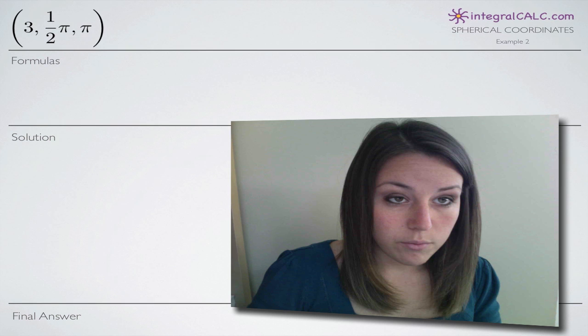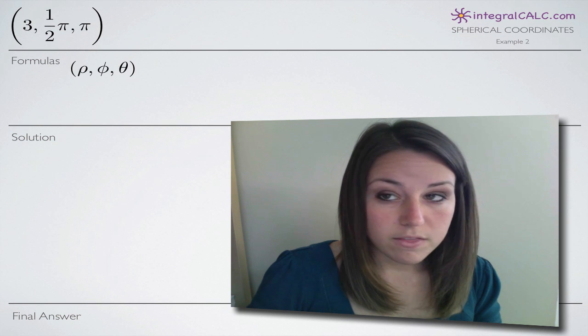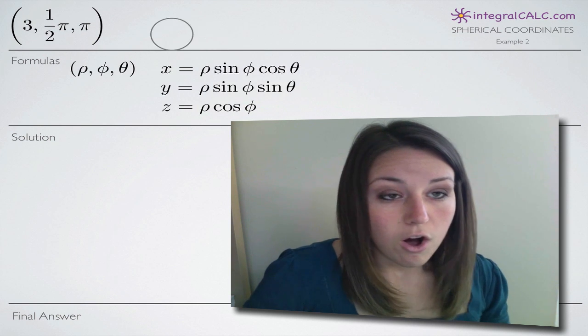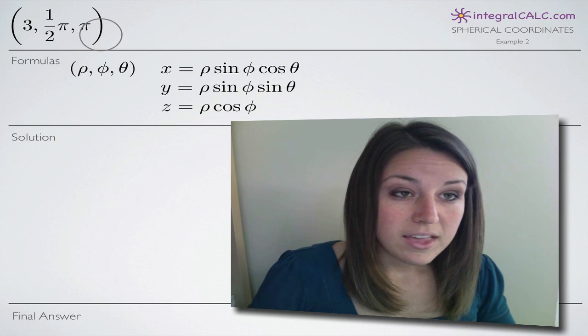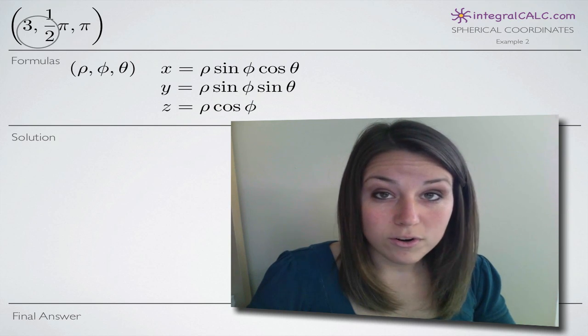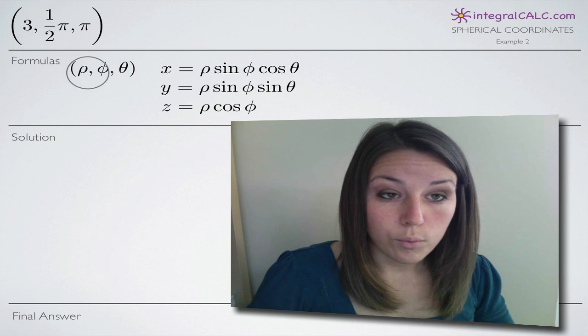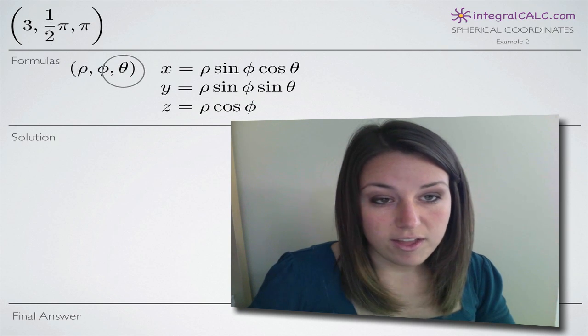So the formula that we're going to be working with for these spherical coordinates is the following. All we really have to remember for a problem like this when we're just converting the coordinates is that our spherical coordinates are going to be given to us in the order rho, phi, theta.